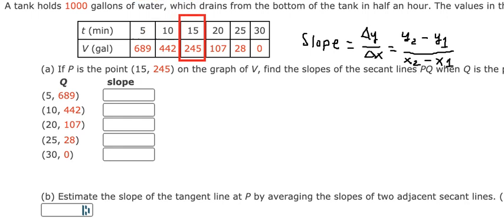So we will find the slope here. I will use the point (5, 689) compared with (15, 245). So the answer for this one: we have 245 minus 689 divided by 15 minus 5, which equals negative 44.4.